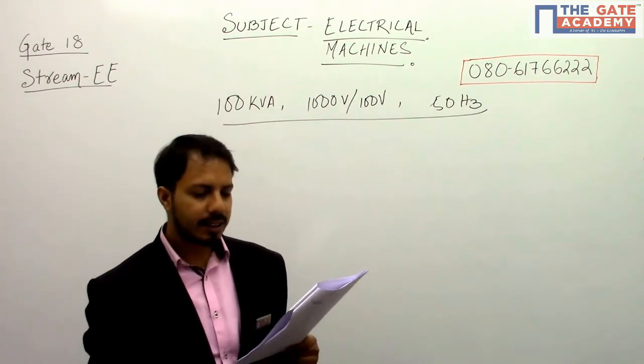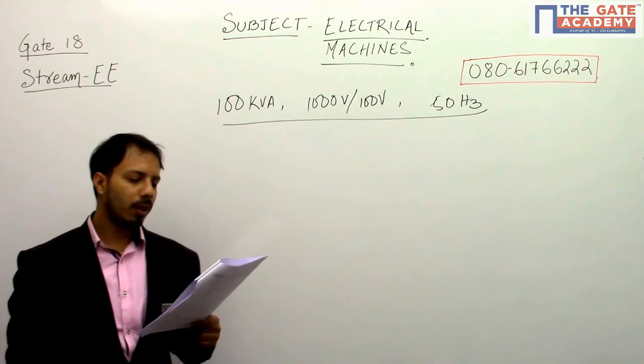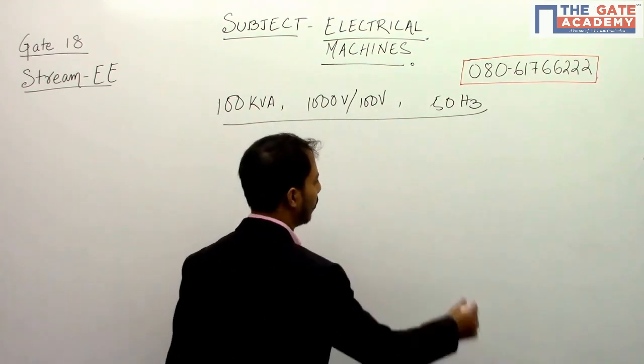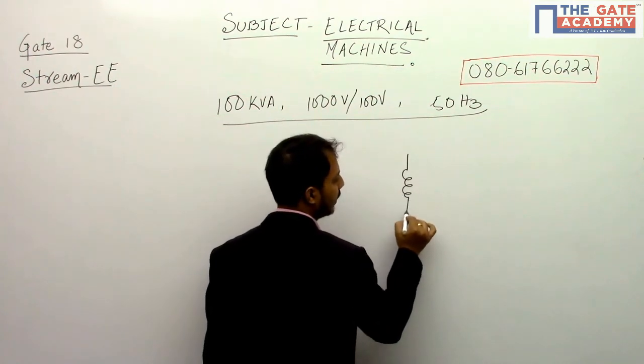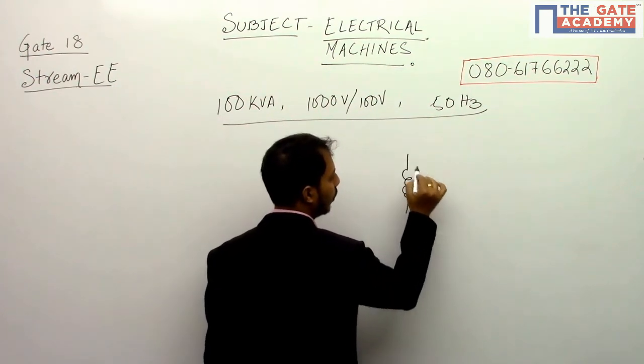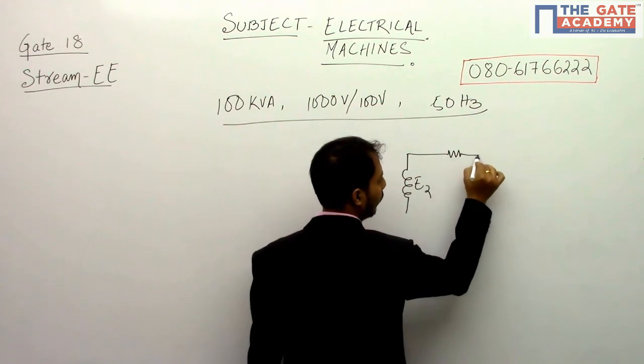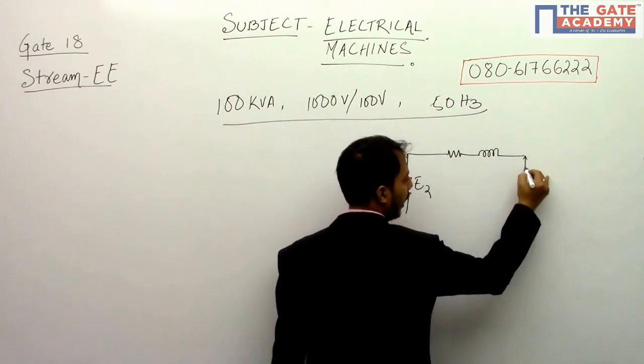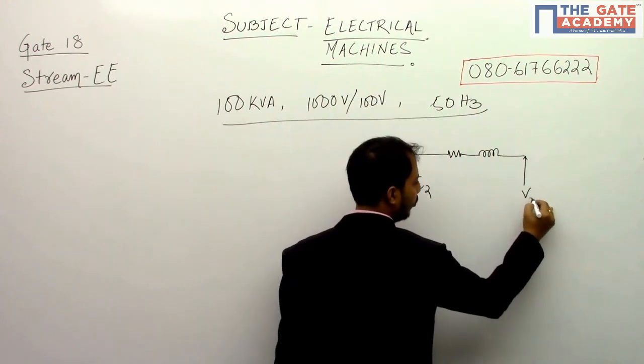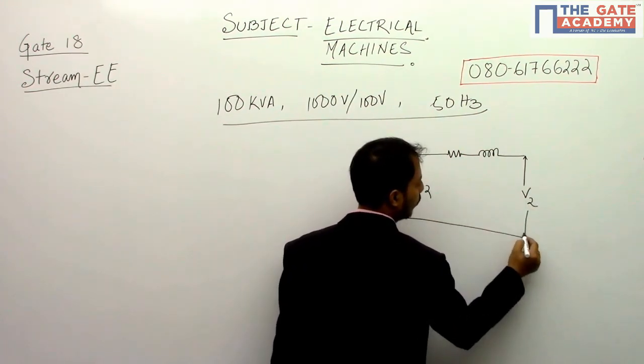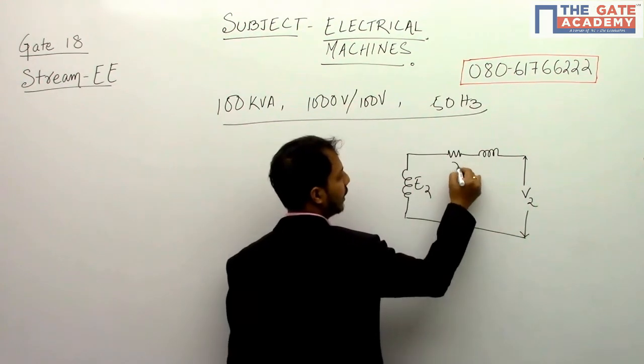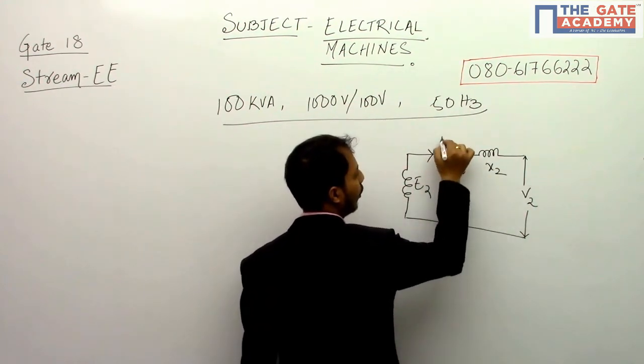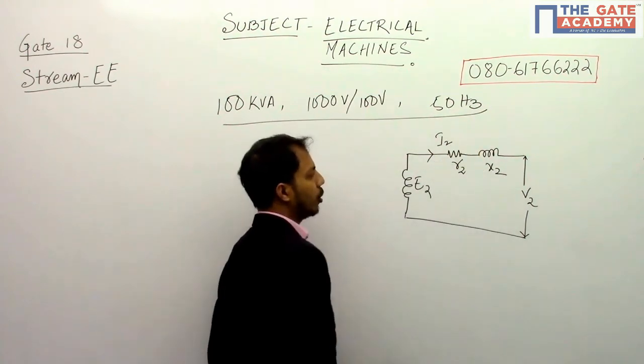Now let us see what is said. There is a voltage drop across the series impedance at full load. That means suppose this is the secondary voltage E2, and then there is some impedance here, and suppose this is the terminal voltage V2. Now suppose this is R2 and this is X2, and current flowing through is I2. So there will be some voltage drop here and some voltage drop here.